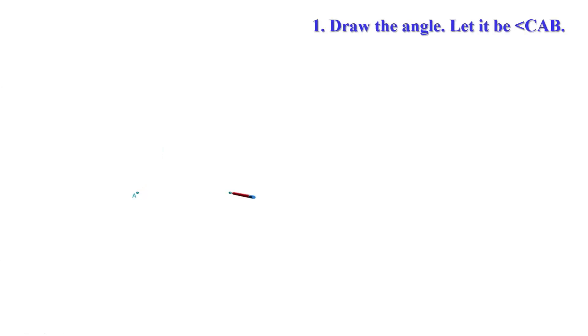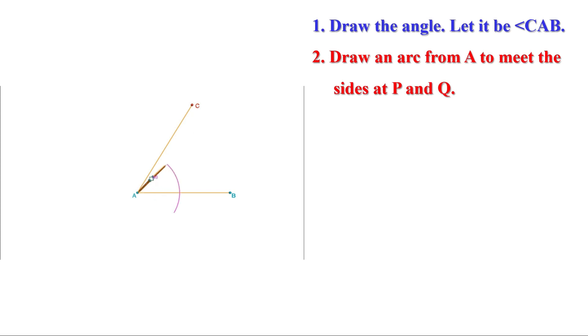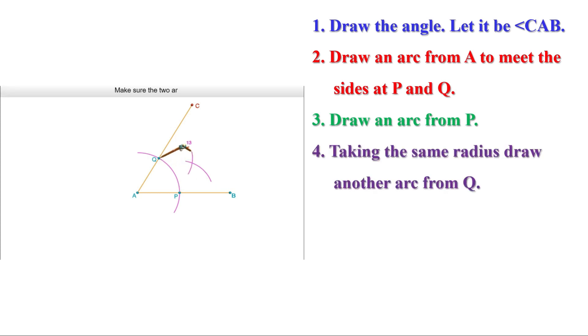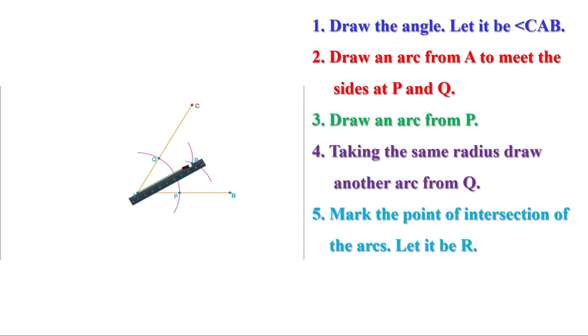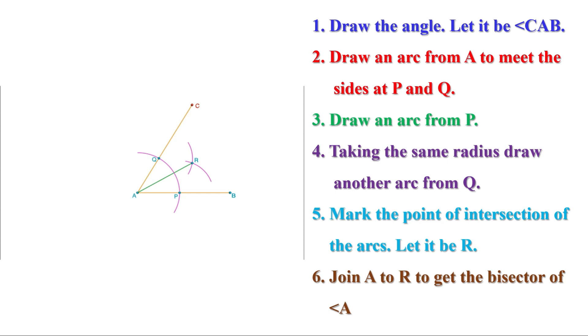We have learned how to draw the bisector of an angle. Let us remember the steps: First, draw angle CAB. Second, draw an arc from A to meet the sides at P and Q. Third, draw an arc from P. Fourth, taking the same radius, draw another arc from Q. Fifth, mark the point of intersection as R. Finally, join A to R to get the bisector of angle A. If the two arcs from P and Q are not intersecting, extend the arcs to meet them.